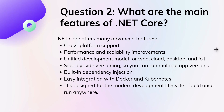Second question: what are the main features of .NET Core? .NET Core offers many advanced features like cross-platform support, performance and scalability improvements, a unified development model for web, cloud, desktop, and IoT, side-by-side versioning so you can run multiple app versions, built-in dependency injection, and easy integration with Docker and Kubernetes for containerization. It is designed for the modern development lifecycle — build once, run anywhere.